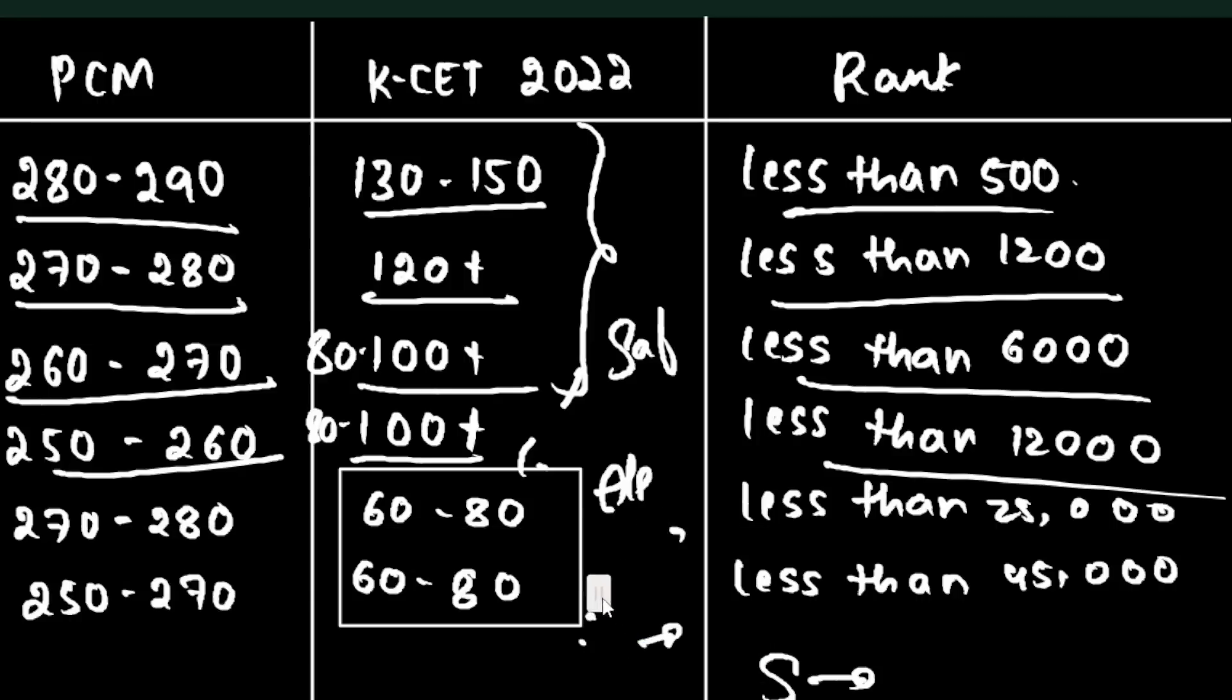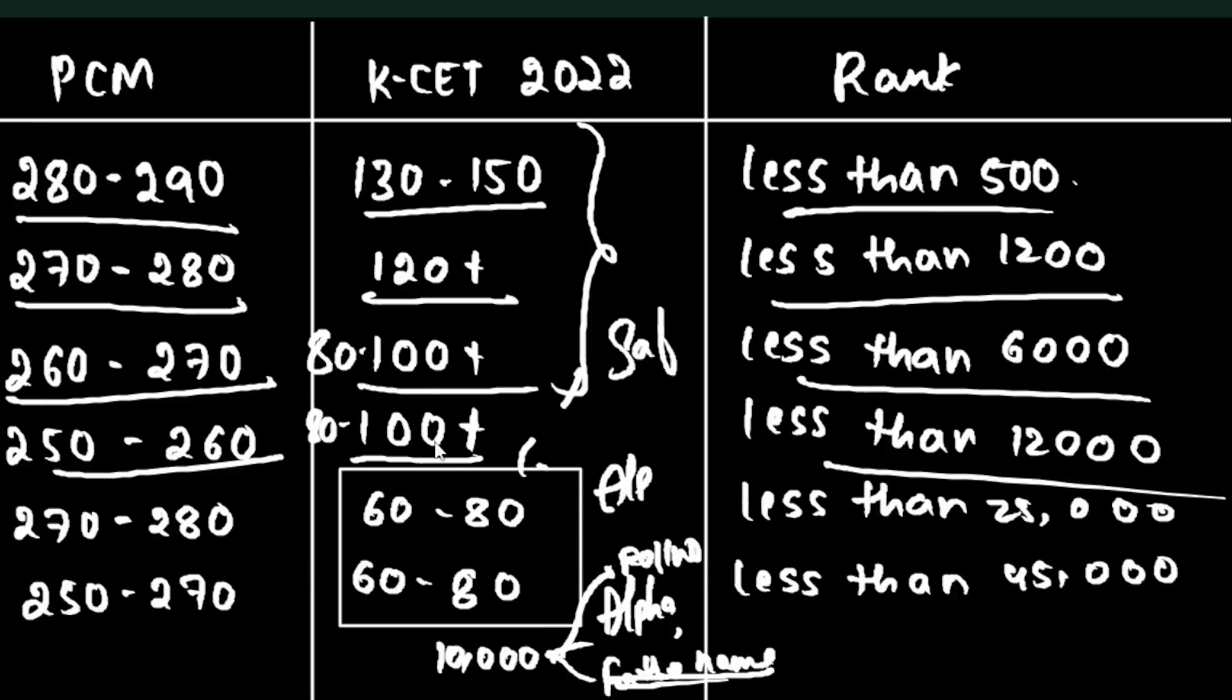The alphabetical logic is used when students have the same marks. Among 10,000 students with equal marks, ranking is decided by alphabetical algorithm. If your name starts with A, your rank will be better. If it starts with Y or Z, your rank will be lower within that group.